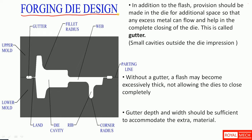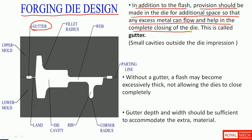Forging die design. In addition to the flash, provisions should be made in a die for additional space so that any excess metal can flow and help in the complete closing of the die. This is called gutter. It is a small cavity outside the die impression — a little extension of the flash. That is gutter.